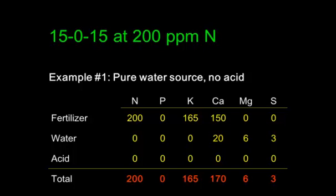As an example, if we use 15-0-15 fertilizer at 200 parts per million nitrogen with a pure water source and no acid: the fertilizer gives 200 ppm nitrogen, zero phosphorus, 165 ppm potassium, 150 ppm calcium, no magnesium, no sulfur. The water gives very little calcium, magnesium, or sulfur, and the acid contributes nothing. So the total solution is 200 nitrogen, zero phosphorus, 165 potassium, 170 calcium, 6 magnesium, and 3 sulfur.